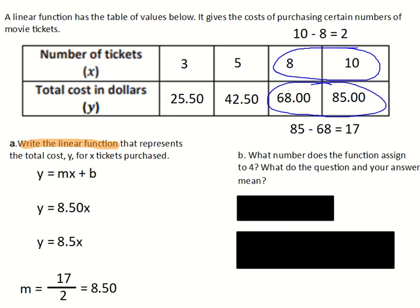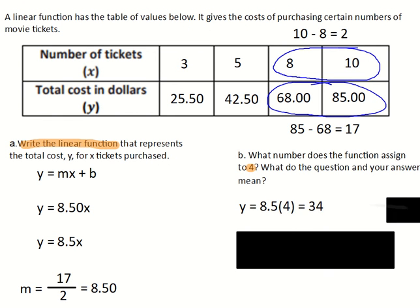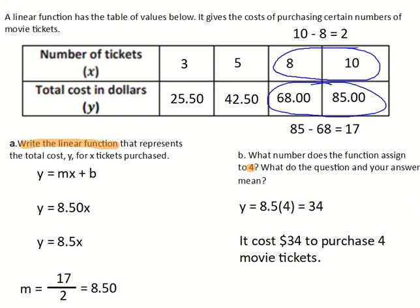Now for part b, it says: what number does the function assign to 4? And what do the question and your answer mean? The question means if you purchase 4 movie tickets, what would the total cost be? So I'm going to substitute 4 in for x into my equation: y equals 8.5 times 4, and I get 34. So this means it costs $34 to purchase 4 movie tickets.